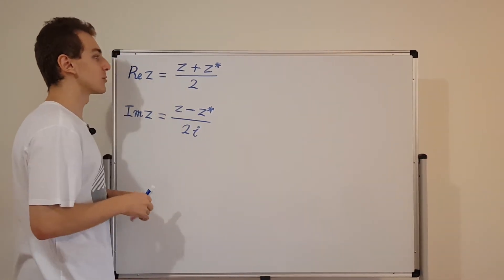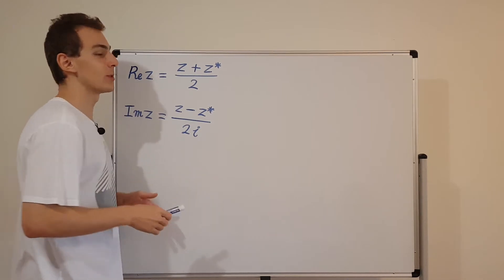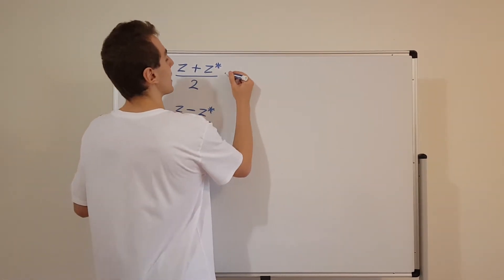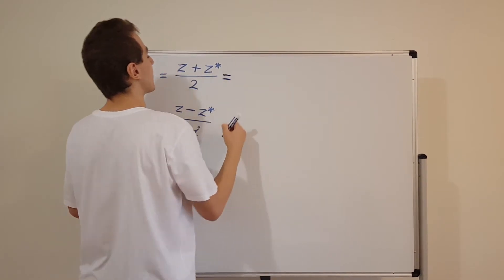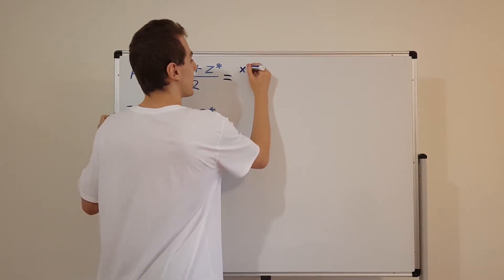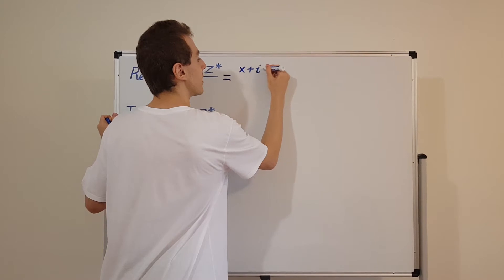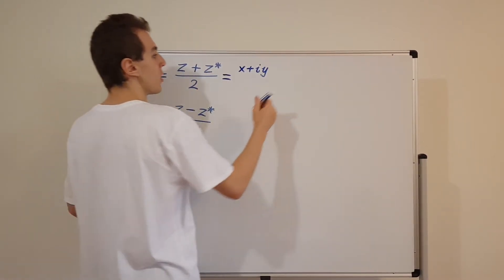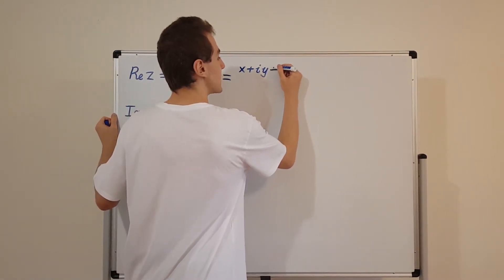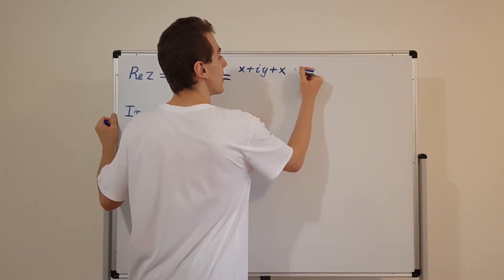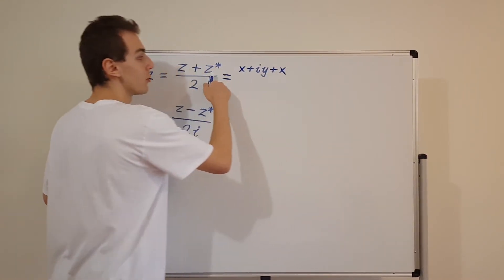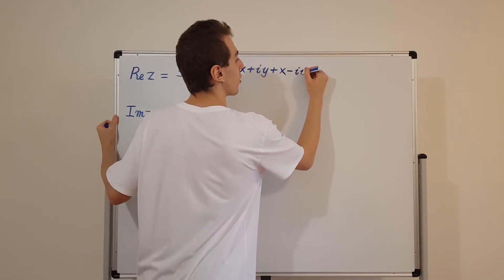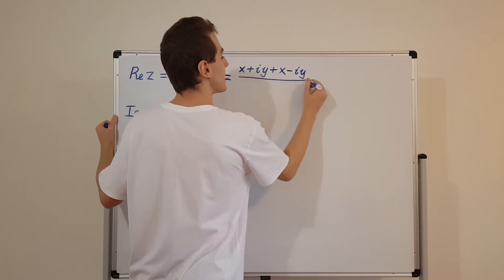So z equals x plus iy — that's how we defined it in the previous video. Let's substitute that in. So z is x plus iy, and z* has the same real component but the imaginary component has a minus sign, so z* equals x minus iy.